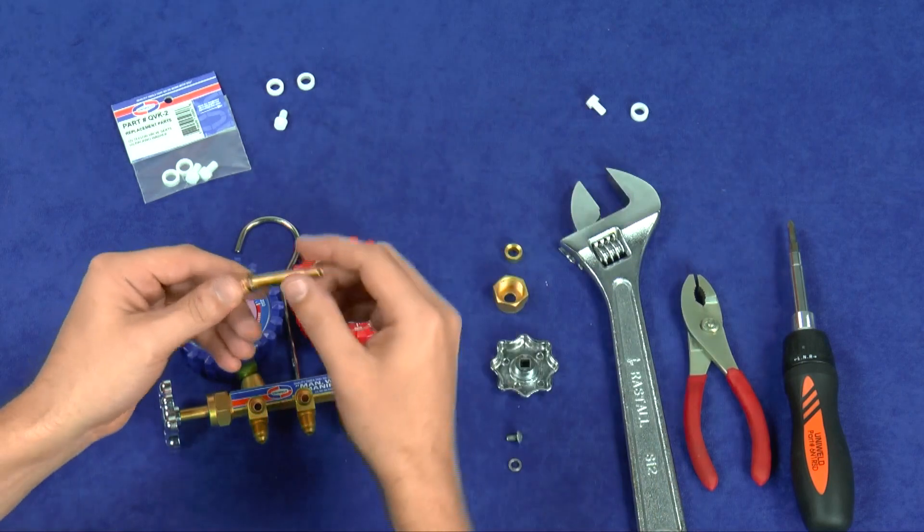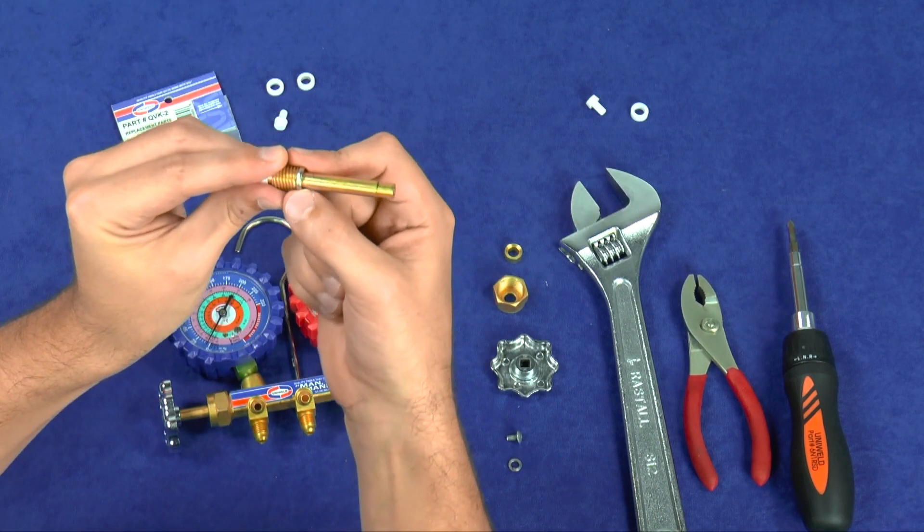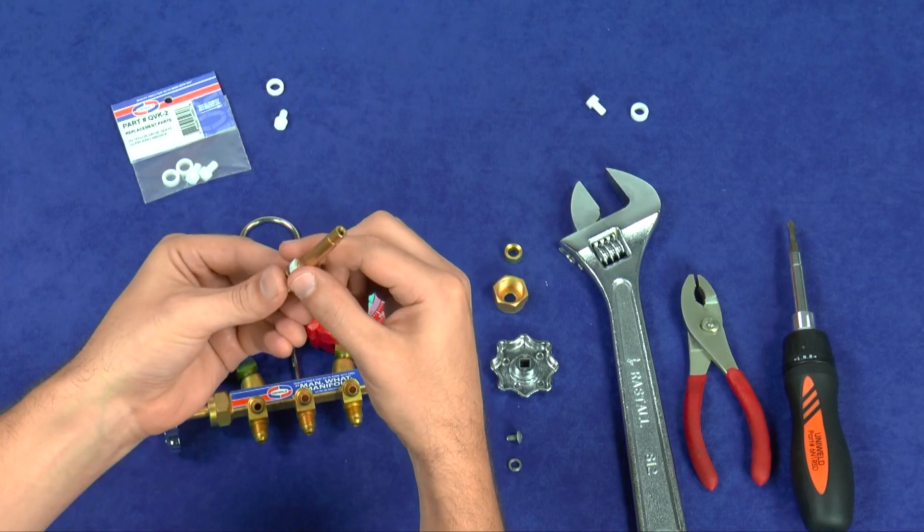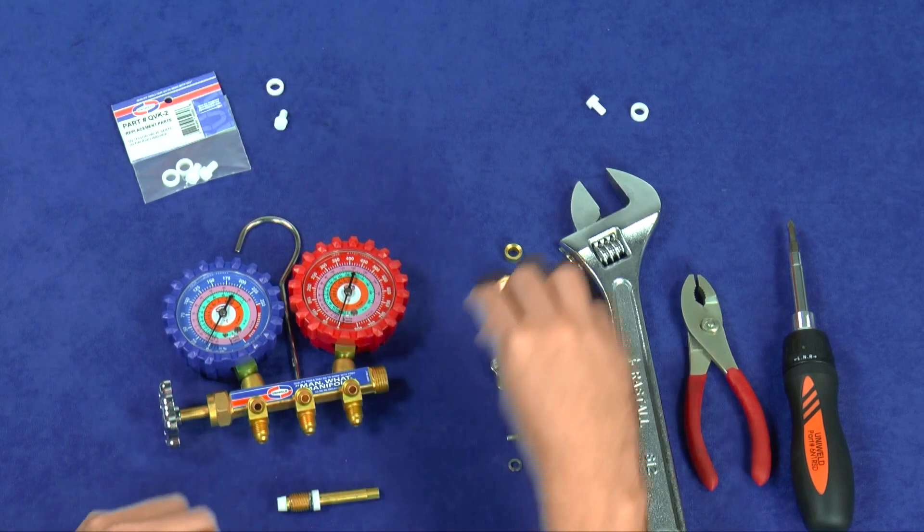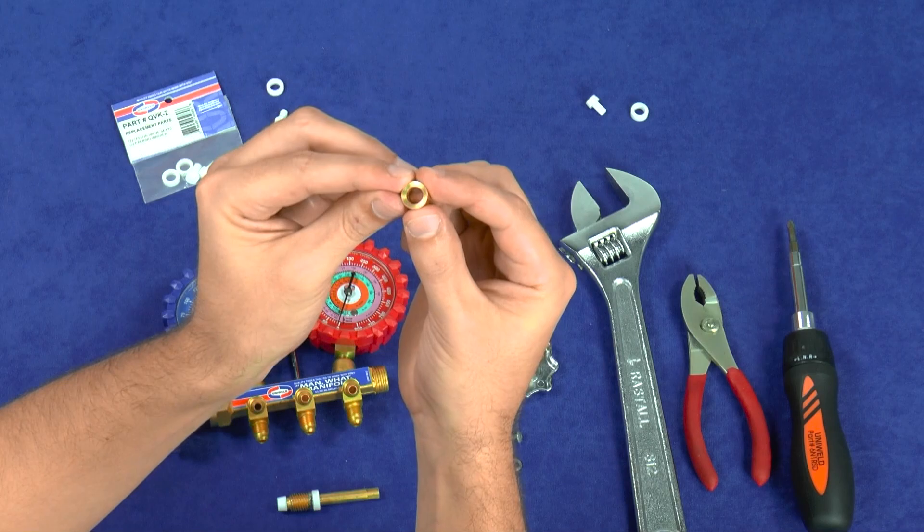Leave the flat washer in place and slide the new Teflon washer on the valve stem. Take note that the brass packing washer is tapered on one side.